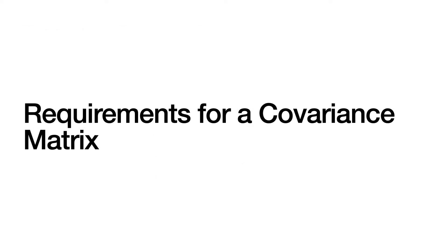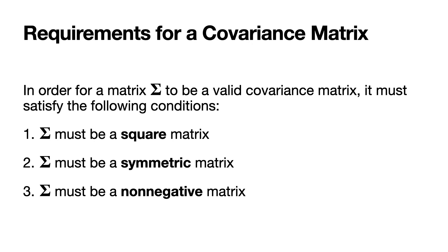Next, let's look at requirements for a matrix to be a valid covariance matrix. In order for a matrix CAP-SIGMA to be a valid covariance matrix, it must satisfy the following conditions: first, CAP-SIGMA must be a square matrix; second, CAP-SIGMA must be symmetric; and finally, CAP-SIGMA must be a non-negative matrix — it must be either positive definite or positive semi-definite.